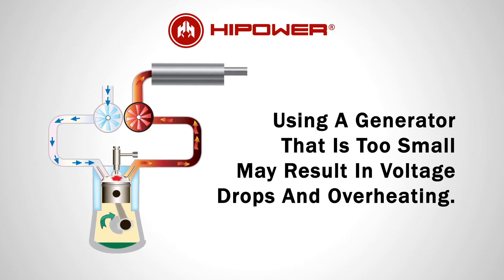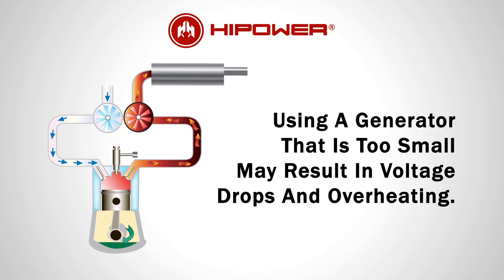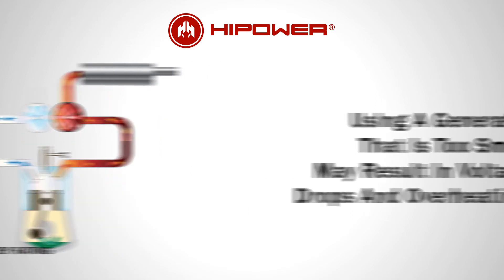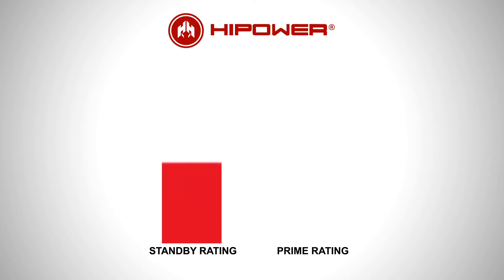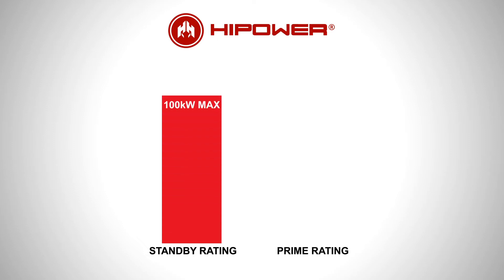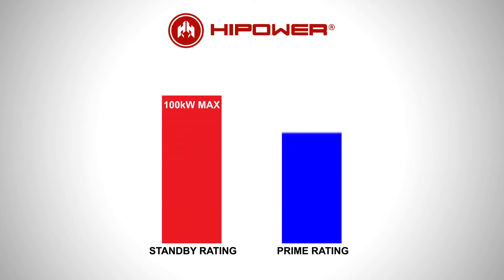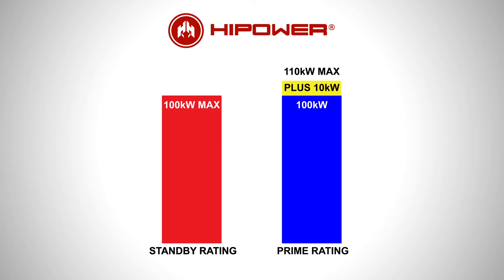There are several factors to consider when sizing your generator. Application Rating: Standby or Prime. A standby rating is for temporary power allowing no overload, while a prime power rating allows for 10% overload for 1 hour and 12 hours running.